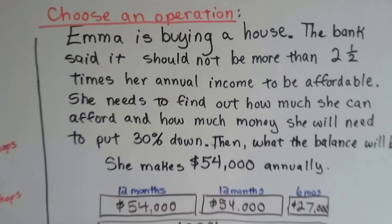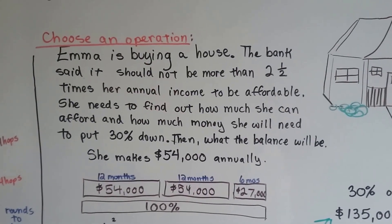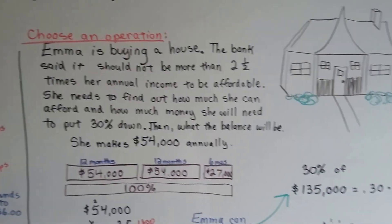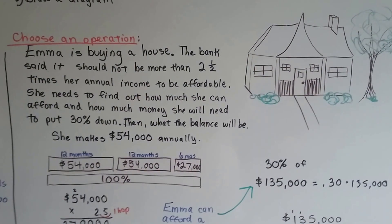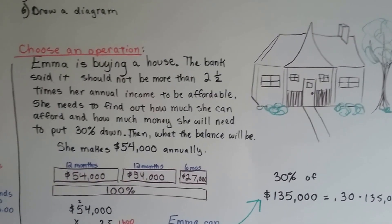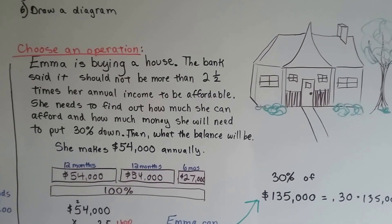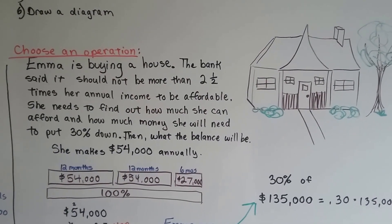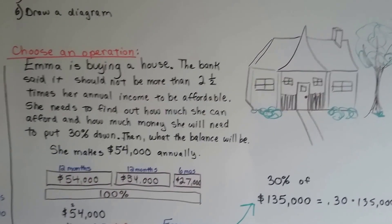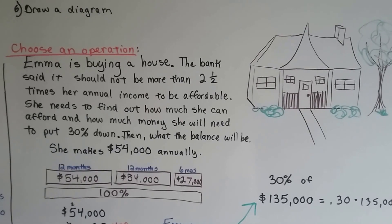Here's one that's a little more detailed. Emma is buying a house, and the bank said it should not be more than 2.5 times her annual income to be affordable. She needs to find out how much she can afford and how much money she will need to put 30% down on the house. Then, what the balance will be after that.